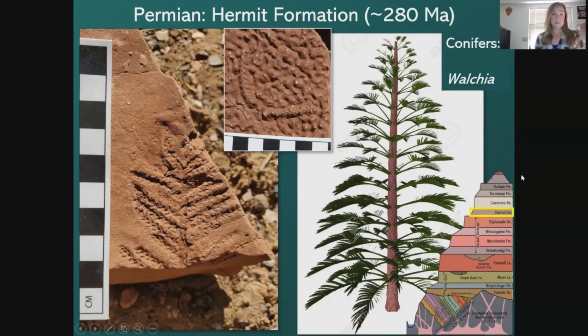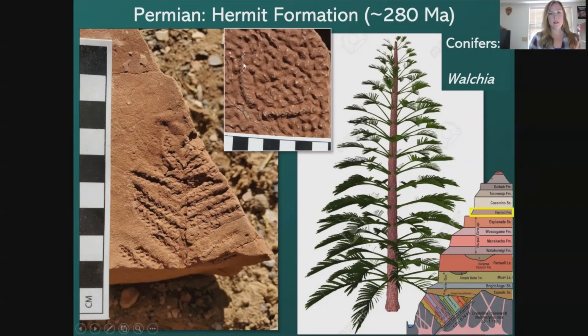Lastly from the Hermit, we have a plant called Walchia, a conifer very similar to the conifers we know today. A lot of times we find just pieces of the conifer branches preserved in algae. This picture shows what Walchia might have looked like during Permian times.